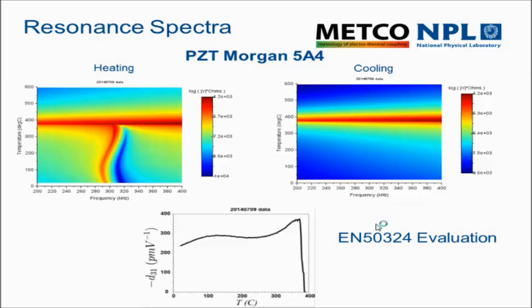On cooling back down from about 600 degrees, we go through a peak in the admittance, which is a peak in the permittivity. But below that there is no resonance because the sample has been depoled. This graph shows the D31 evaluated according to the standard from the data — broadly the D31 increases over the whole temperature range and disappears at the Curie temperature, but there are some other interesting things happening in there.